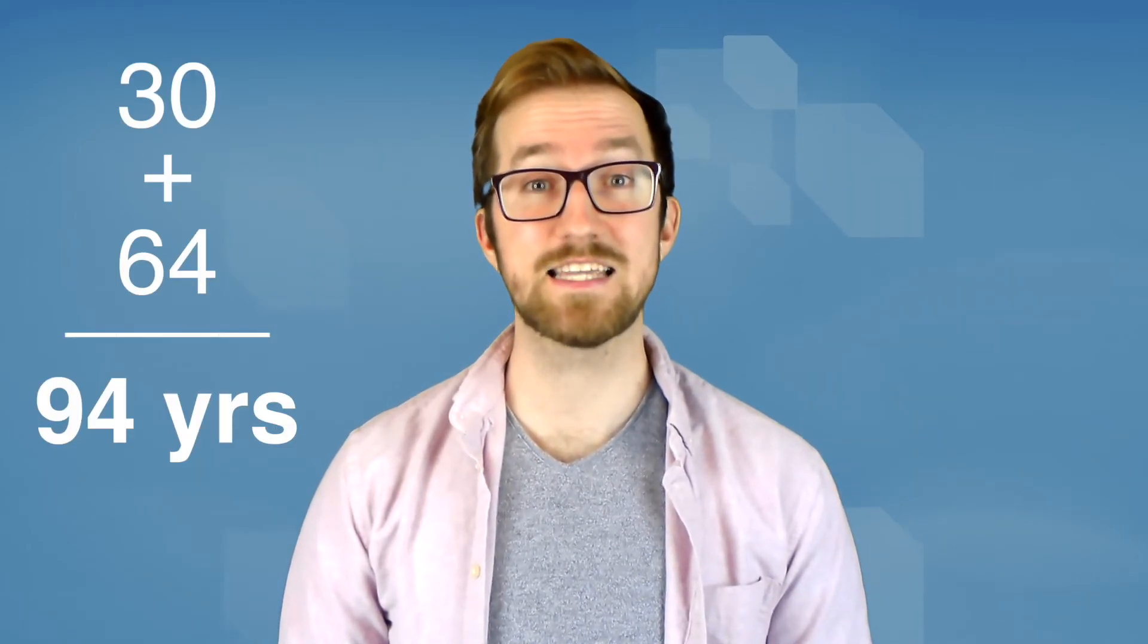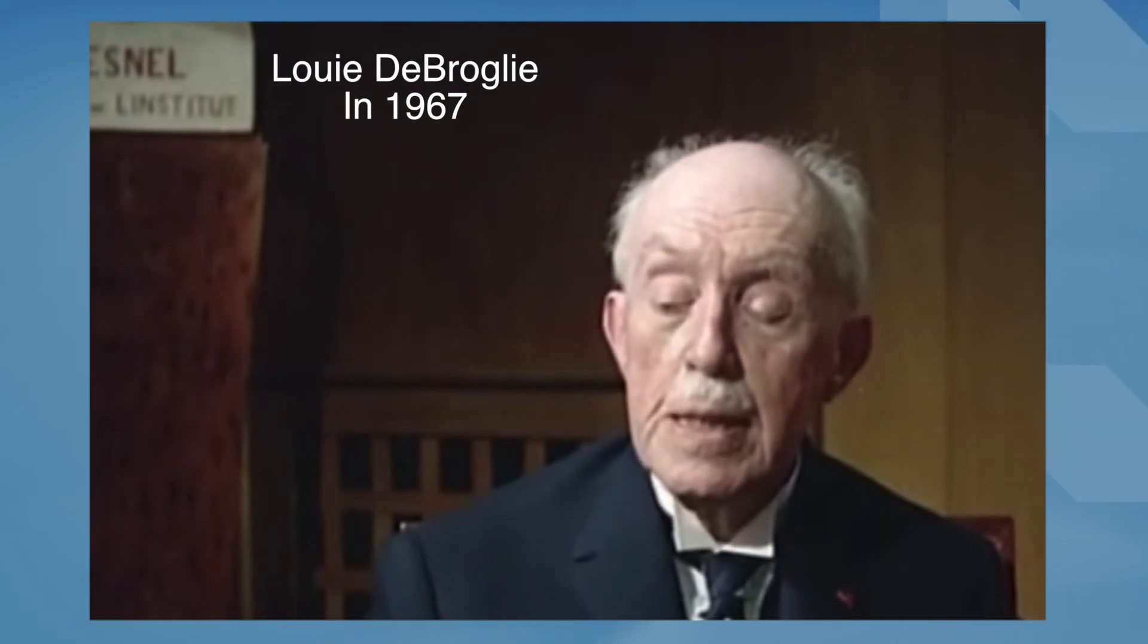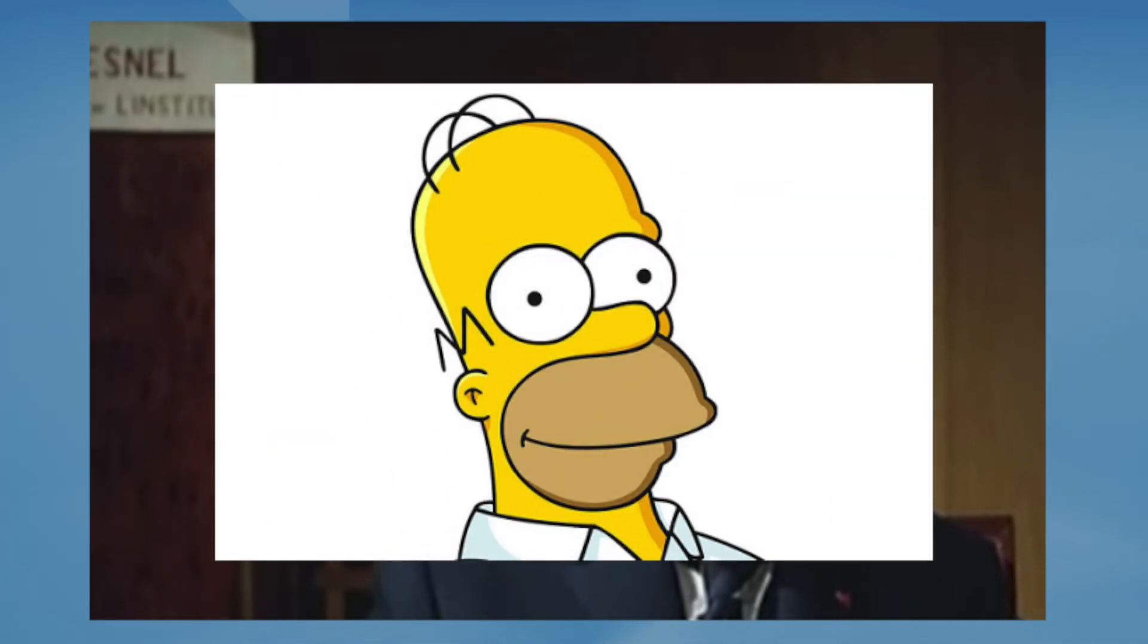He figured that out when he was 30, and he lived for 64 more years. He never married, he had a rich, fulfilling life as a famous scientist, and he even got to see man land on the moon. And he died just one month before The Simpsons was first on TV, March 19, 1987.